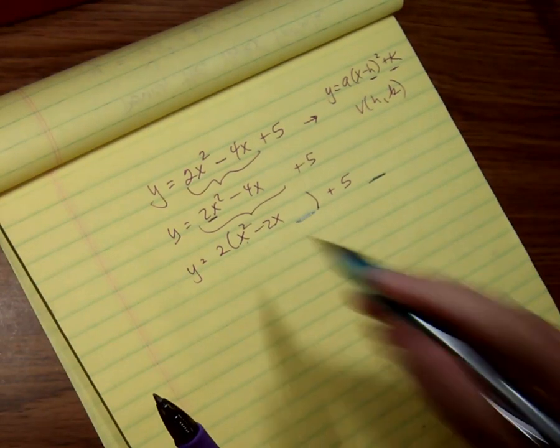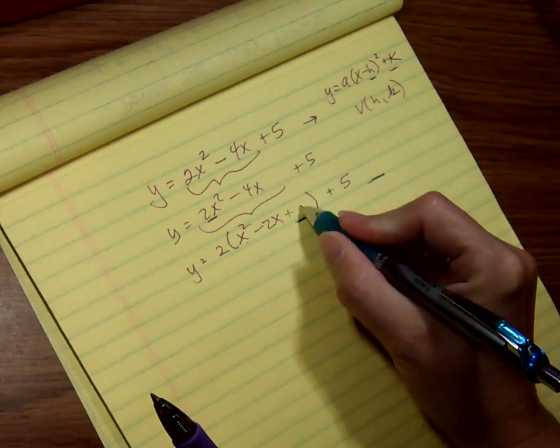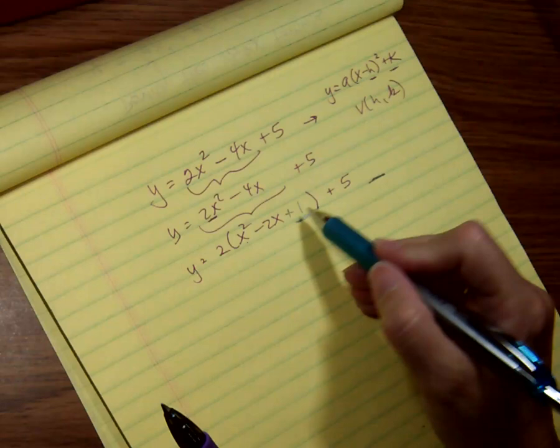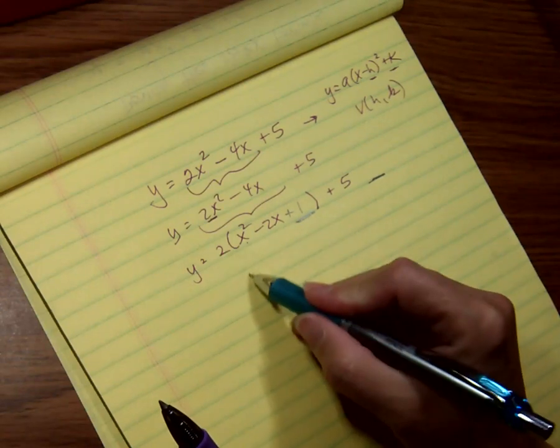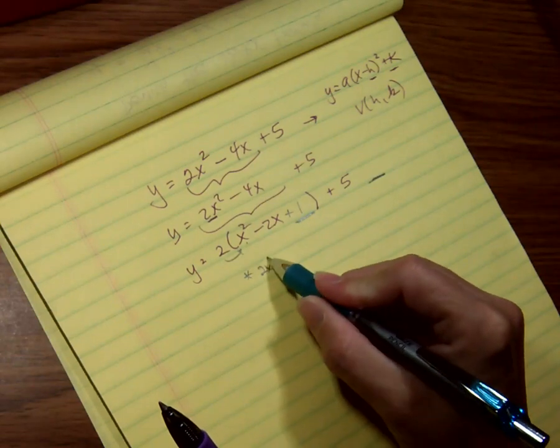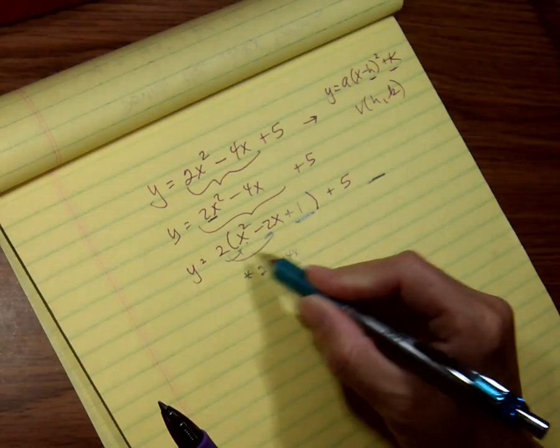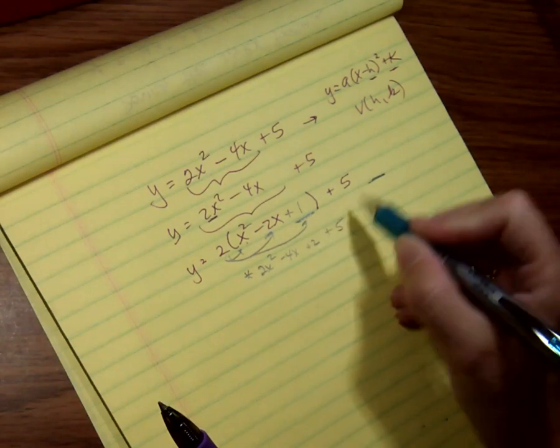So I'm going to go through the process to complete the square. So I take half of negative 2, which is negative 1, and I square it. The problem is I really didn't add a 1 to this side. If you take this and you distribute out the 2, you'll see that I have 2x squared, negative 4x, plus 2, and then I still have my plus 5.